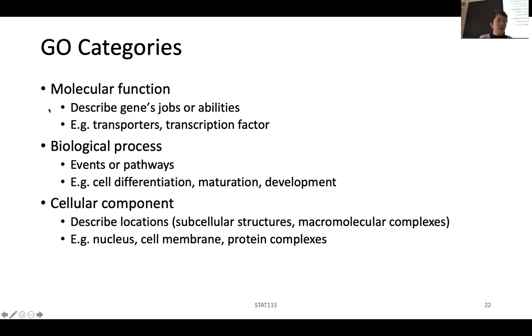Every gene is given three terms. One of the terms is to annotate the molecular function of the gene. What is this gene's job or abilities? So you can have transporters or transcription factors. You roughly say what this gene does. The second code or annotation for this gene is biological process, which says what kind of event, what kind of pathways does this gene participate in? These are things like cell differentiation, maturation, development, or metabolism or something. There's some pathways in here.